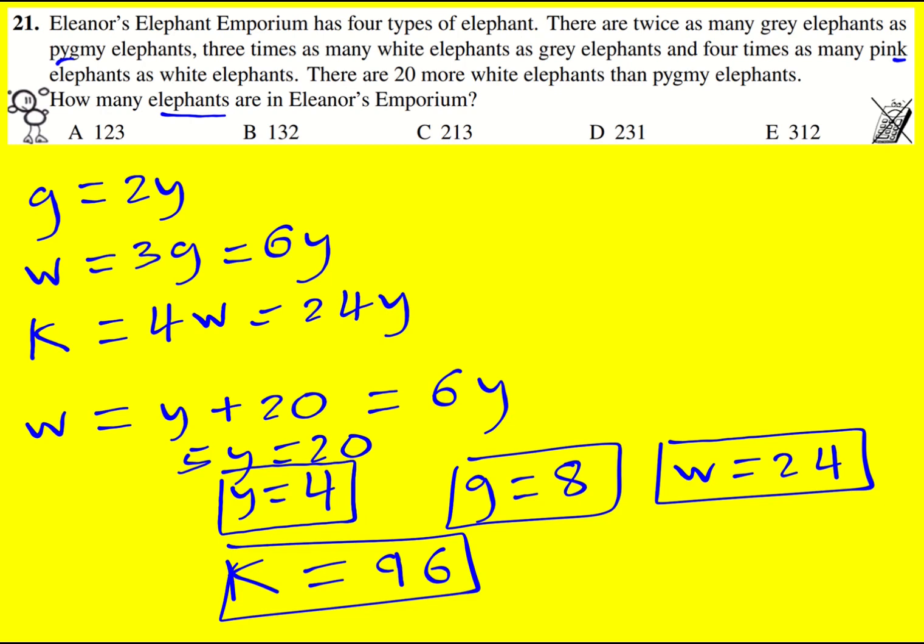So in total 96 plus 4 is 100, so this is 120, plus 12 gives us the number of elephants as 132. Nice one.